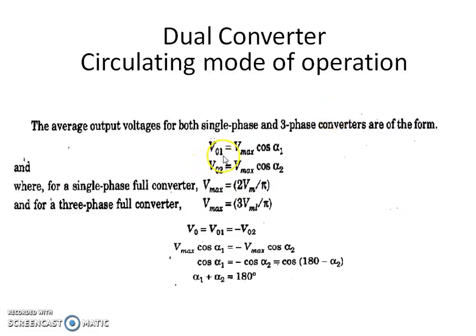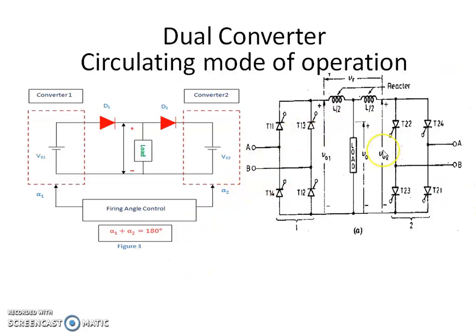The output voltage of converter 1 is V01 equals Vmax times cosine alpha 1. The output voltage of converter 2 is V02 equals Vmax times cosine alpha 2. For a single-phase dual converter, Vmax equals 2Vm divided by pi. For a three-phase converter, the output voltage is 3Vm(line) divided by pi. Since we connect the fully controlled converters in anti-parallel, the relationship between alpha 1 and alpha 2 is alpha 1 plus alpha 2 equals 180 degrees. For example, if alpha 1 is 60 degrees, then alpha 2 is 180 minus 60 equals 120 degrees. This means converter 1 acts as a rectifier and converter 2 acts as an inverter, or vice versa.